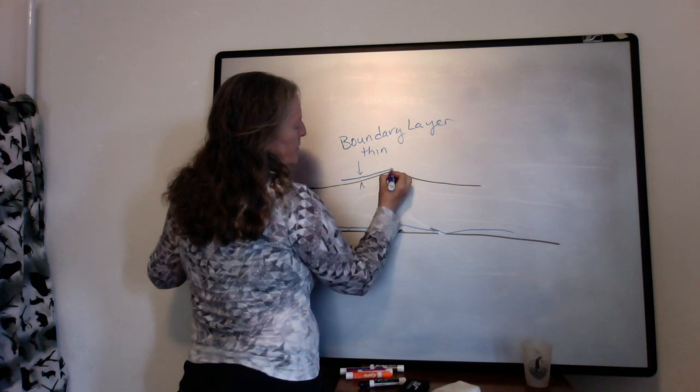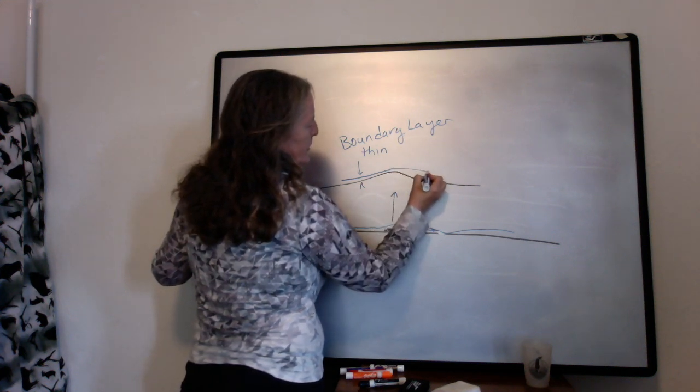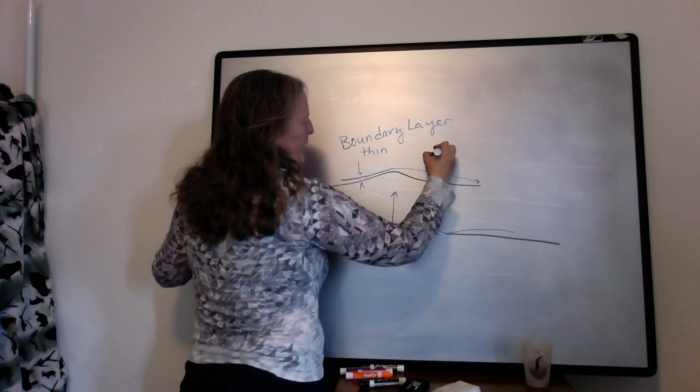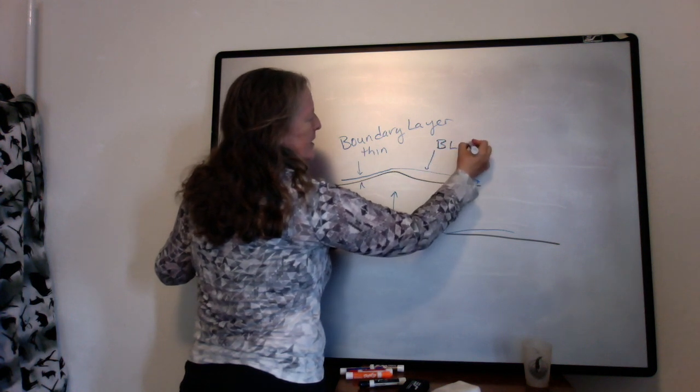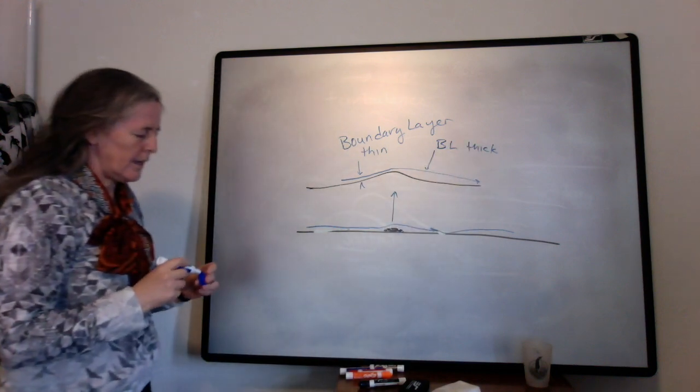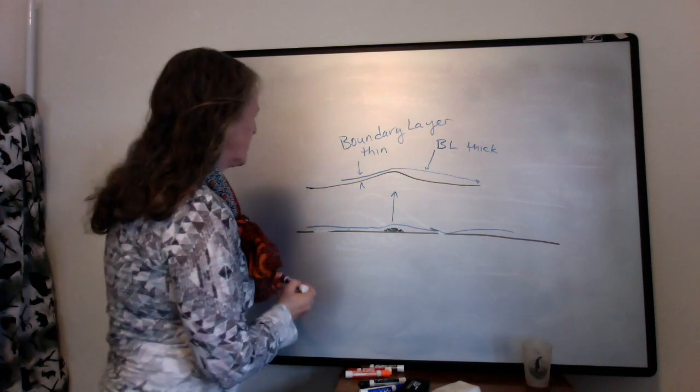When the flow reaches the top of the high, it has momentum going downstream, like this, and over here, your boundary layer is thick. And when the boundary layer is thick enough, you get a lot less sediment transport.